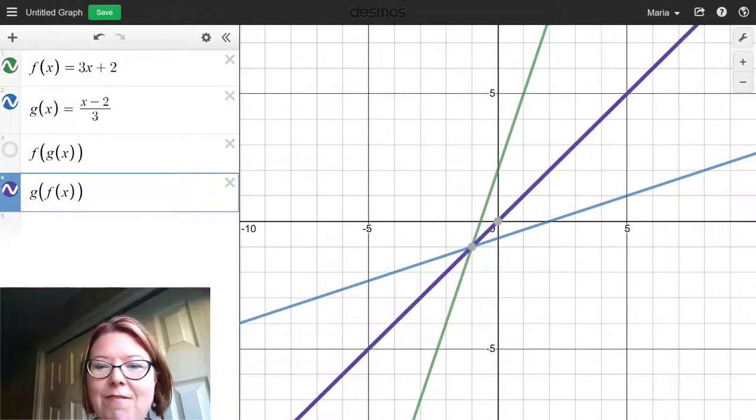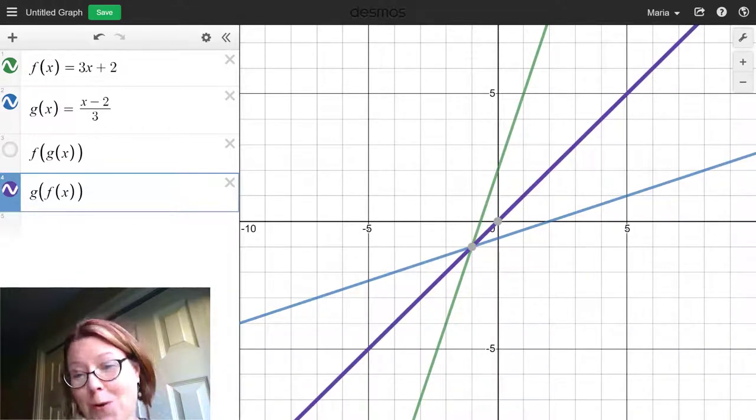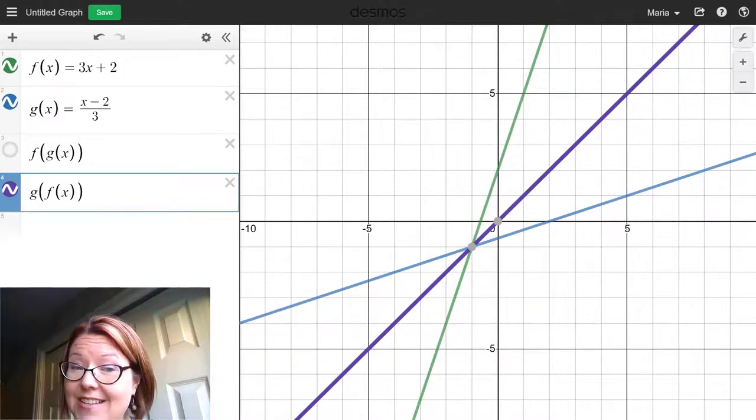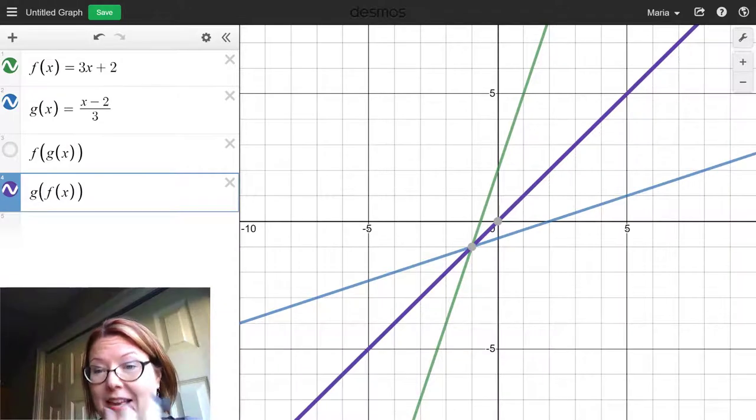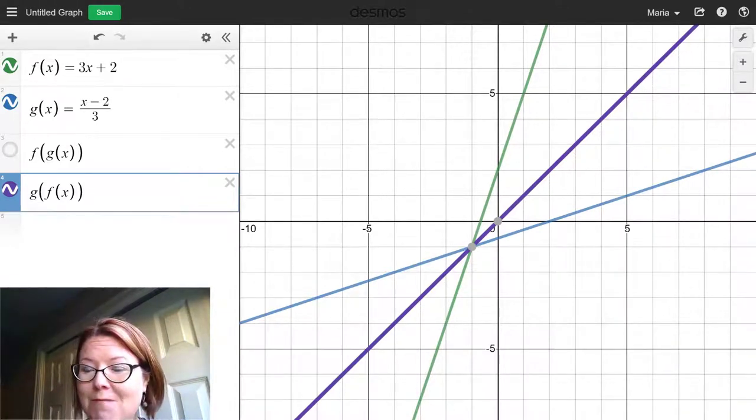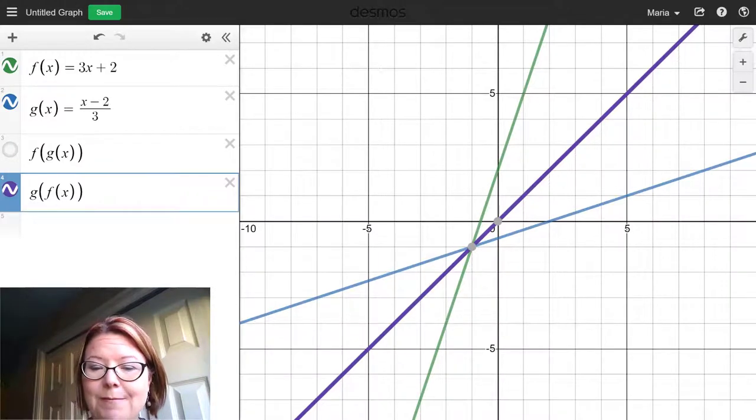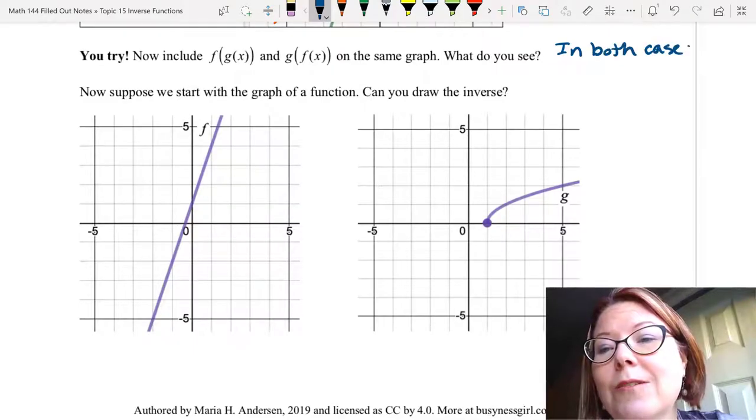Likewise, g(f(x)) also gives the perfect diagonal y = x. So one way you can test whether functions are actually inverses is to put them into Desmos as like an f and g function, and then do the compositions both ways and make sure that this is what you see. So in both cases, we see the line y = x.